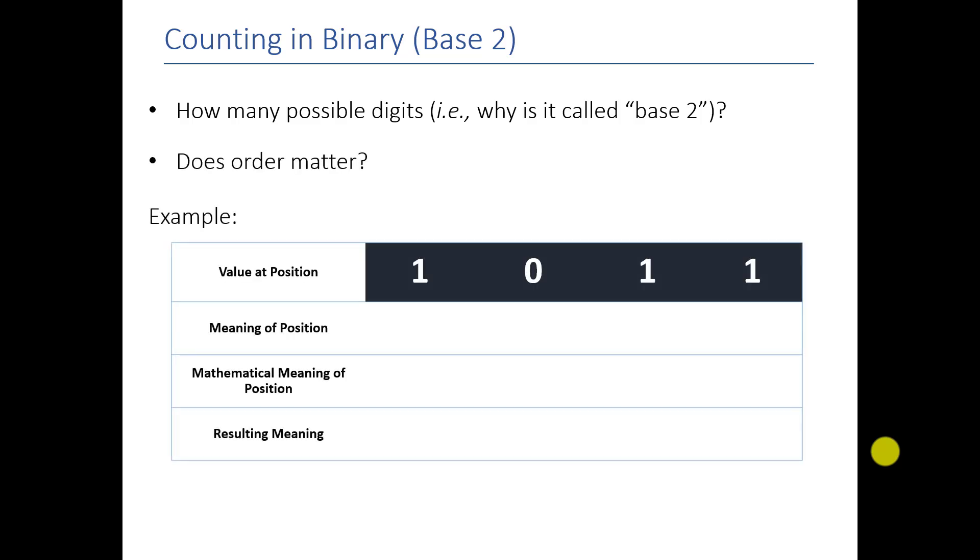The same thing can be applied to binary. The only difference is that now instead of ten possible digits, we actually have two possible digits, and we refer to those as bits rather than digits. And the order still matters. So if I was to take a value here, we could do the same exact thing. But instead of thinking of them as the ones, tens, hundreds, thousands position, in binary we think of this as the ones position, the twos position, the fours position, and the eights position. I could really think of this as the two to the zero position, the two to the one position, the two to the two position, and the two to the three position. So if I want to get the meaning of this, I do the same thing I do with my decimal number. I take one times its position, the zero times its position, and so on and so forth. And if I add them all up together, I end up with eleven, which means that 1011 in binary is equivalent to the decimal value of eleven.